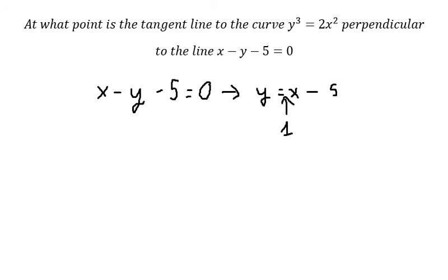The tangent line of the curve is perpendicular to this line, so we can find the slope k. It should be -1 divided by the slope. Since the slope of the given line is 1, we get k = -1 because the tangent line is perpendicular to the line.